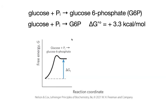Enzymes can only do so much because they catalyze both the forward and the reverse directions. They can lower the activation barrier, but they can't change the difference in free energy between your starting and finishing products — that delta G naught prime.